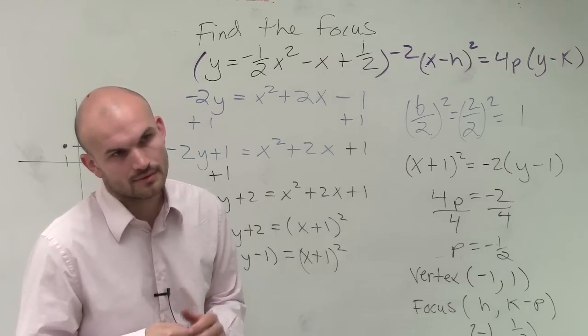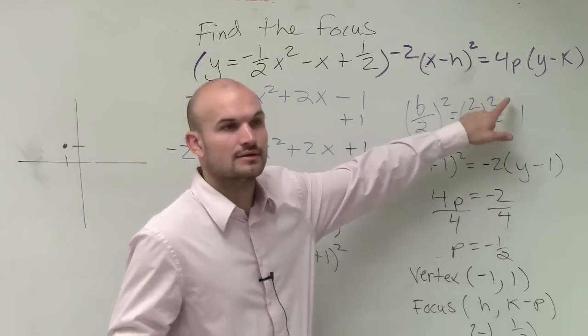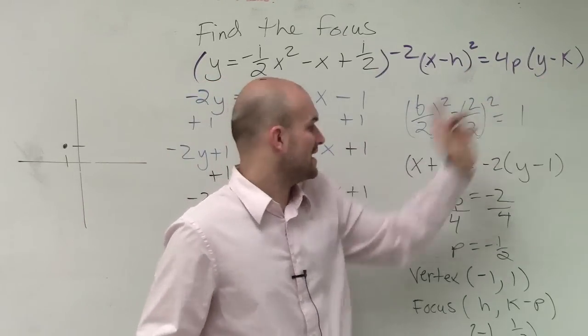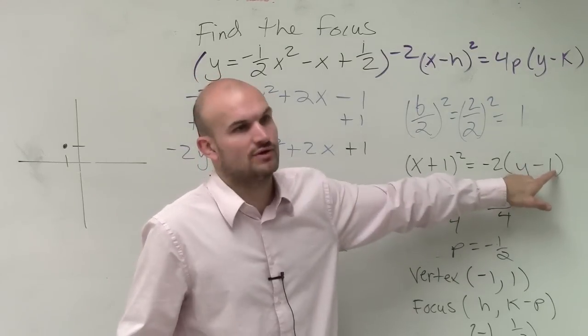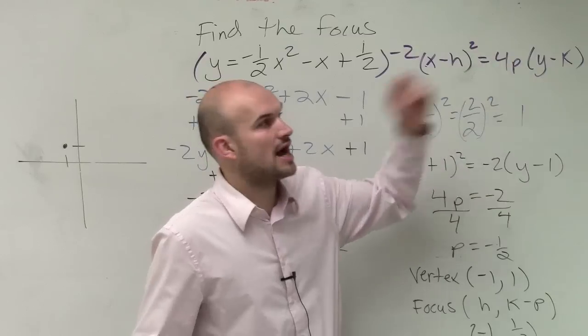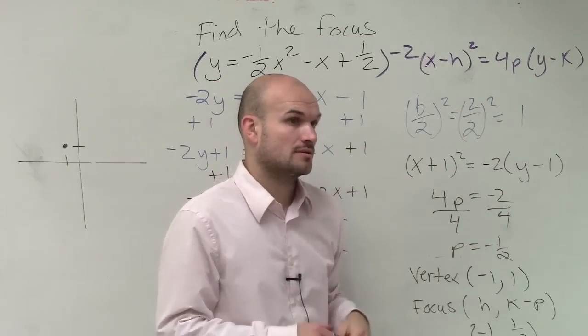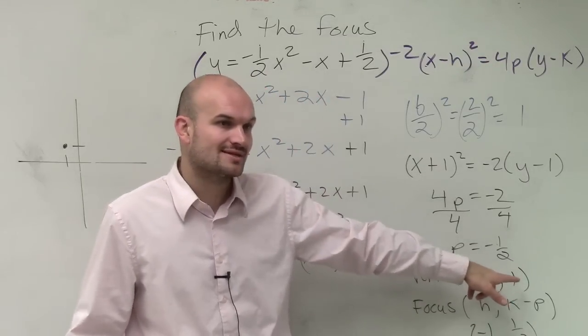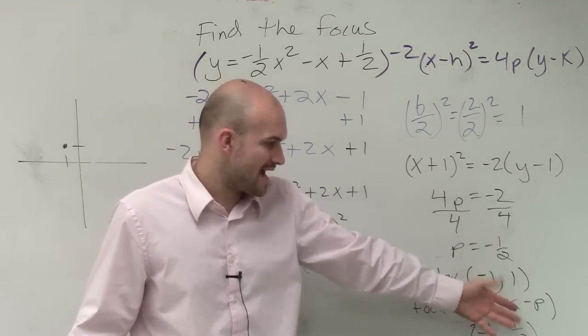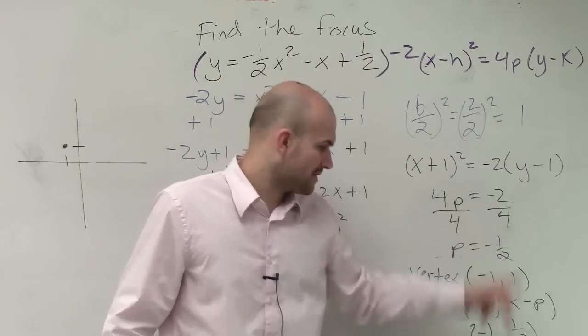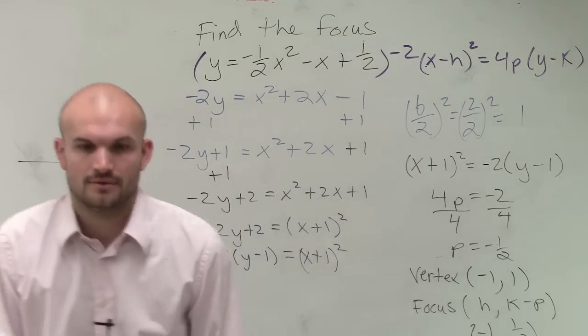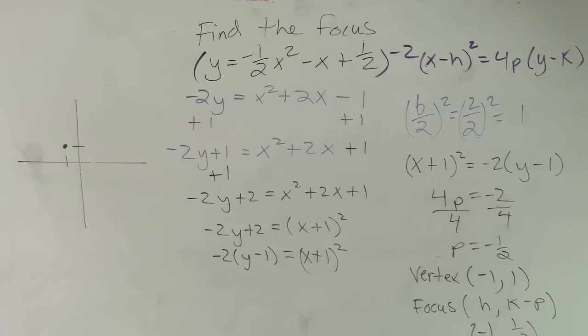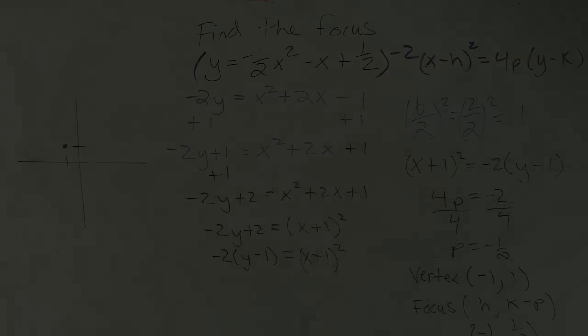Okay? How did you come up with the vertex? h k, opposite of h, opposite of k. So if this is 1, then it's negative 1. If this is negative 1, then it's positive 1. It's the opposite of h, opposite of k. So just remember now, then you're going to subtract. Since p is negative, you subtract. So it's going to be 1 minus one-half, which is one-half. Okay? Anybody have any questions?